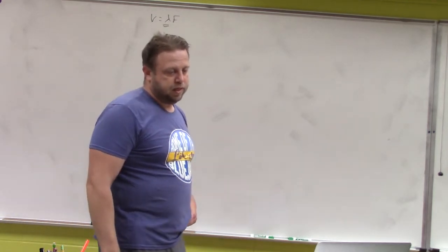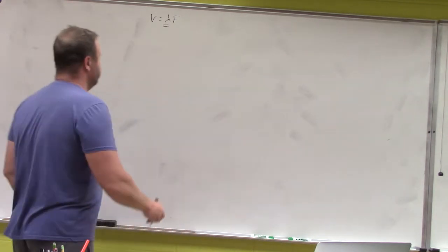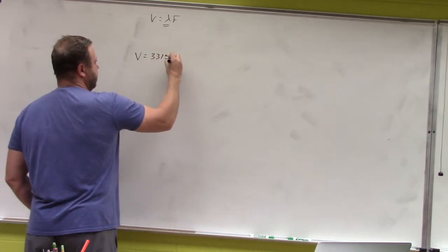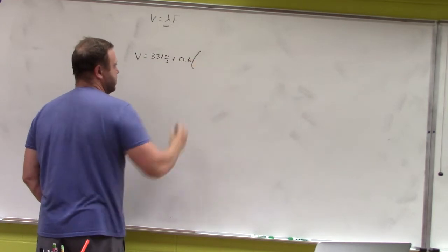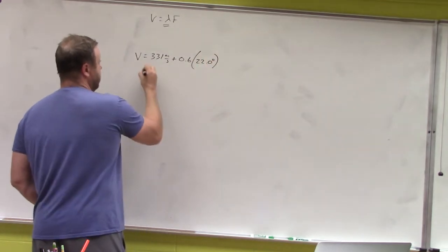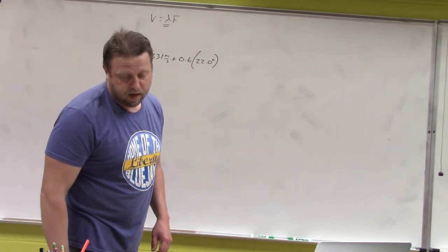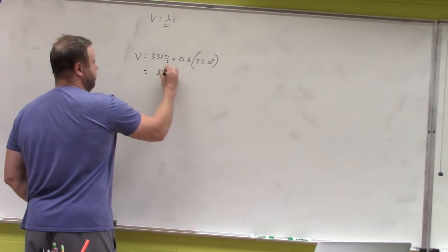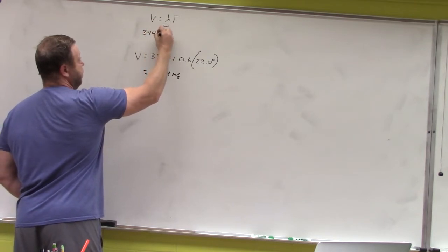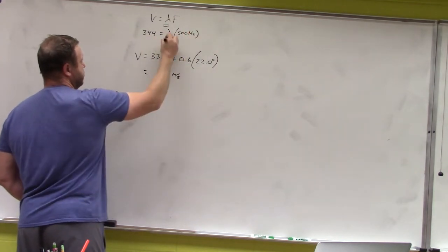We have the frequency of 500 Hz, but we need to solve for the speed of sound in the room. The equation for speed of sound is 331 meters per second plus 0.6 times the temperature in degrees Celsius, which is 22.0°C. Calculating this gives a speed of sound of 344 meters per second. Plugging into the equation: 344 equals lambda times 500 Hz.